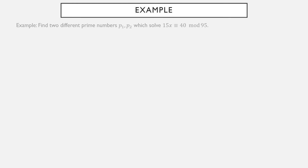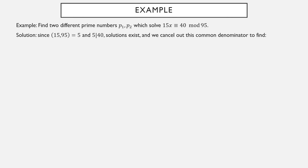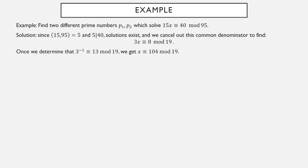Let's find two different prime numbers that solve 15x ≡ 40 modulo 95. The GCD of 15 and 95 is 5, which is a factor of 40, so there are solutions. We cancel the 5 to get the equivalent statement 3x ≡ 8 modulo 19. Now 3 and 19 are relatively prime, so 3 inverse exists. We compute it: 3 times 13 is 39, which is equivalent to 1 mod 19, so 3 inverse ≡ 13 mod 19. Multiplying both sides by 13: 3 and 13 cancel (their product is 39 ≡ 1 mod 19), and 8 times 13 is 104.